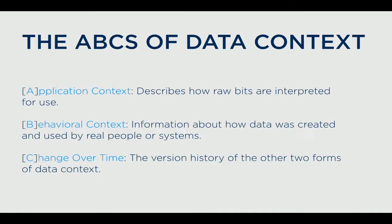The last kind of data context is change over time. This captures the version histories of the other two kinds of data context. It's important because we don't think it's just valuable to understand what the world looks like today — we also want to know what it looked like yesterday, six months ago, or a year ago, and help users understand how things have evolved. It's not just today or a year ago, but that evolution process that helps users unlock the value of data context in an organization.